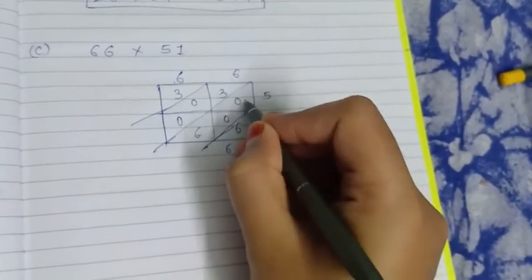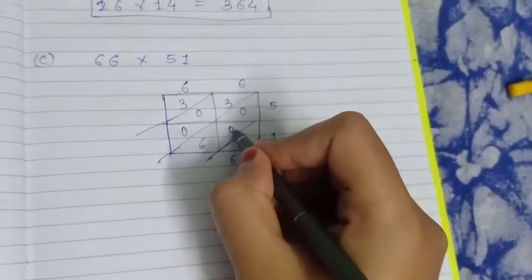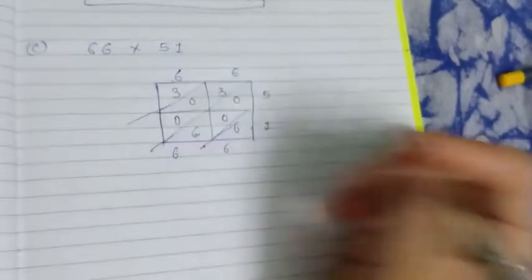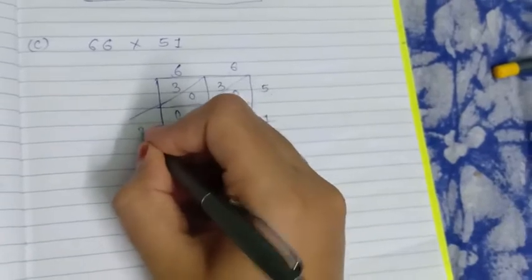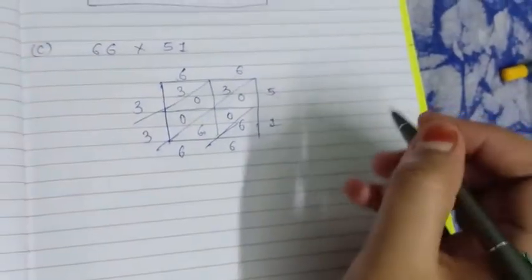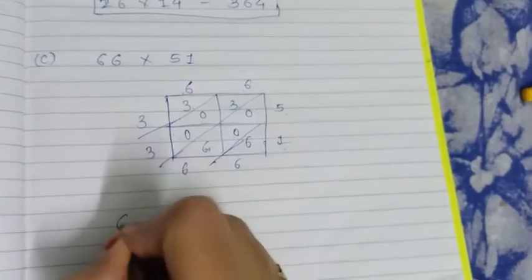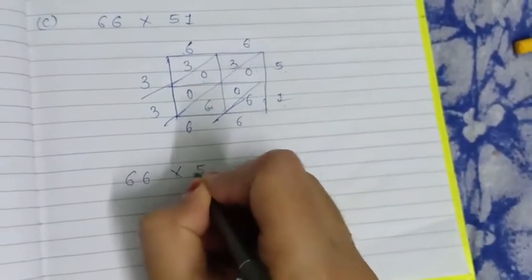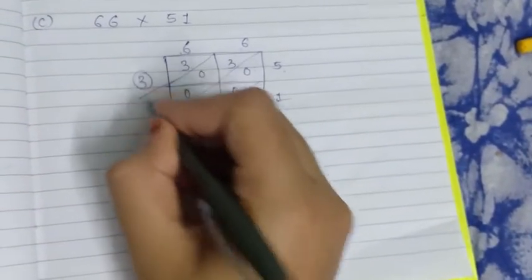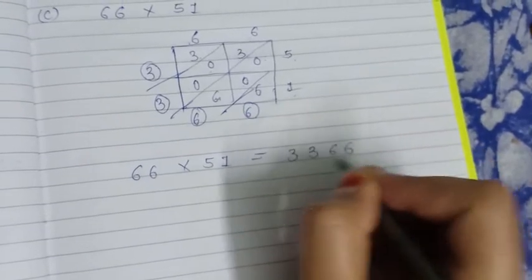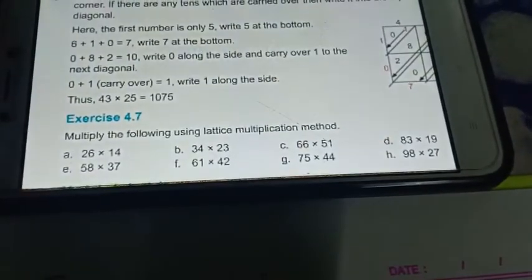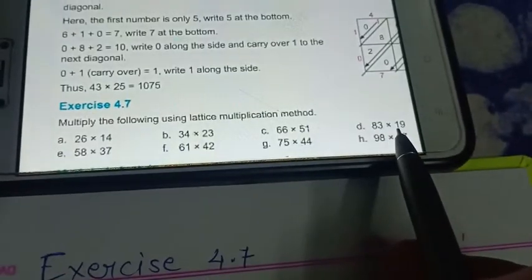Now do the diagonal addition: 6 + 0 + 0 = 6; 6 + 0 = 6; 0 + 0 = 0; 0 + 3 = 3; and 3 as it is. So the answer is: 66 × 51 = 3366.